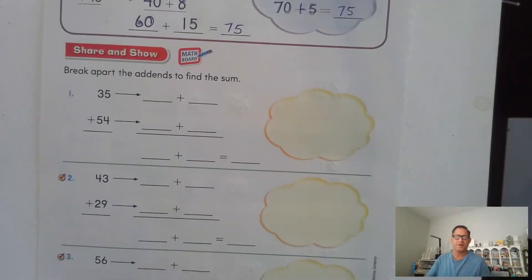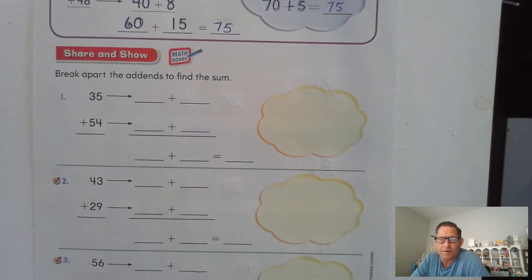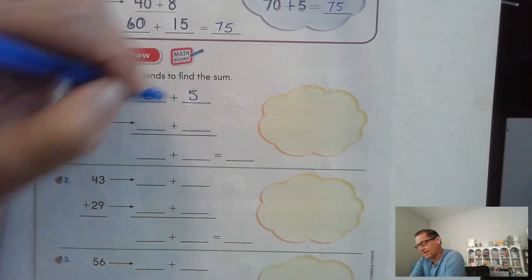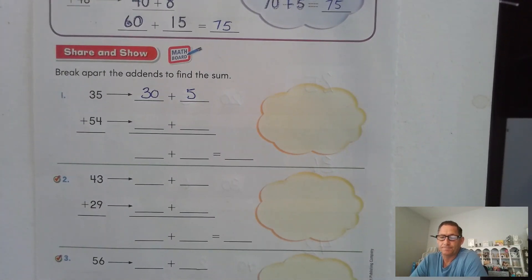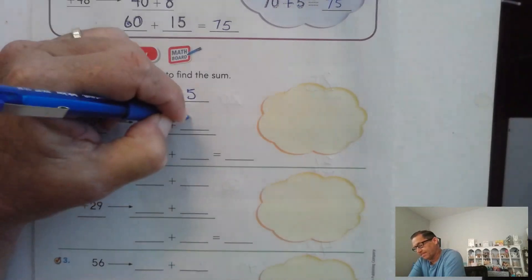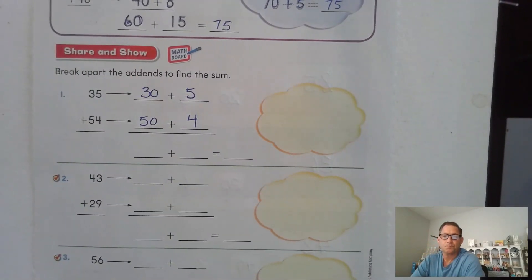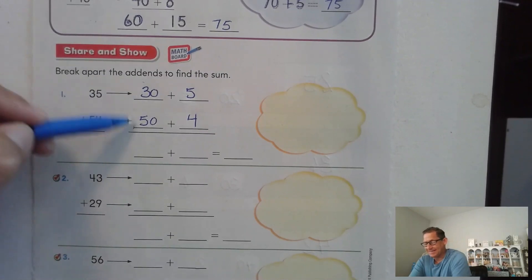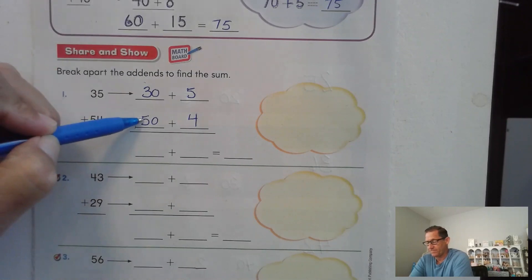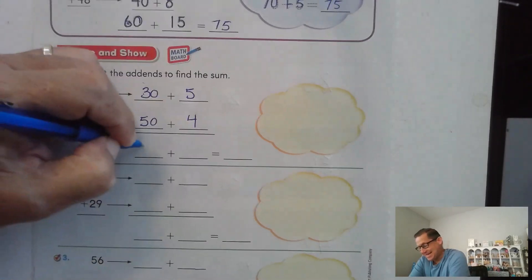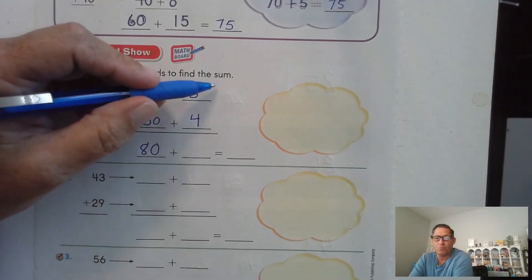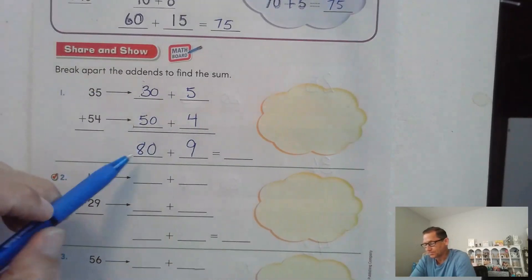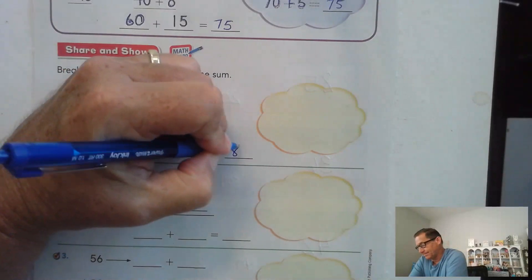So let's try some. 35. Break that apart into tens and ones. You should have come up with 30 and 5 for 35. For 54, we should get 50 and four more. Add the tens. 50 and 30 is 80. 5, 6, 7, 8 tens is 80. And 5 and 4. Well, 4 and 4 is 8 plus one more is 9. And 80 plus 9 is 89.